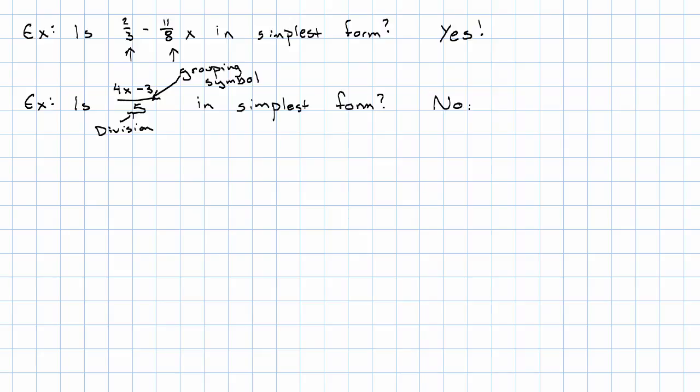We would need to simplify it in order to get it into simplest form. One more example. Is 3X plus 5 minus 7X in simplest form? Again, no. Why not? These are like terms, so we would need to simplify further.